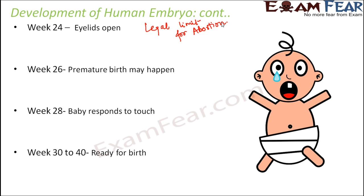From week 30 to 40, the baby is ready for birth. All organs have already developed before week 26, and these remaining weeks allow the organs to develop even better. A baby born between week 30 and week 40 should be fine. The baby gradually aligns itself with its head down so that it becomes easy to come out of the mother's womb. This is the entire nine-month period of embryo development inside the human female's body.